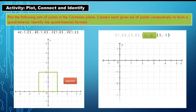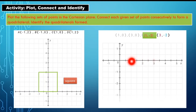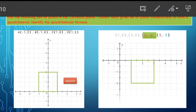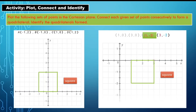Number two: points at (1, 0), (3, 0), (1, −2), and (3, −2). Locating (1, 0), then (3, 0), then (1, −2), and (3, −2), and connecting them together — what quadrilateral is formed? You are right. That is a square.